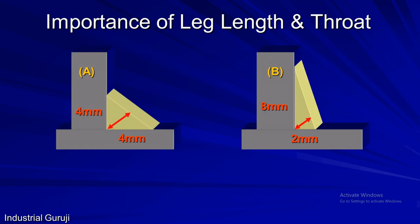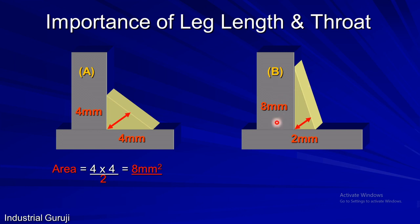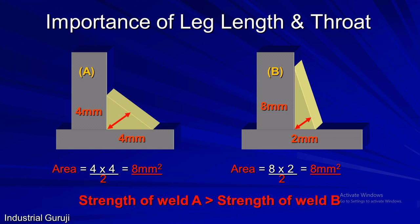Now, regarding the importance of leg length: in case A, both vertical and horizontal legs are equal at 4 mm, so the area is 8 mm². In case B, the vertical leg is greater than the horizontal leg. Though the area remains 8 mm² — the same as A — the throat thickness is altered, considerably reducing the strength of weld B. So throat and leg length both play an important role in deciding the strength of a fillet weld.